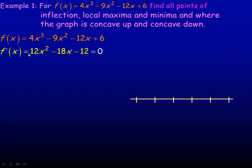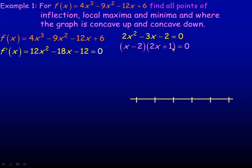We set that equal to zero. Notice we can divide a 6 out of all terms: 6 goes into 12x squared giving 2x squared, and 6 divided into negative 18x gives negative 3x, and 6 divided into negative 12 gives negative 2. To solve this quadratic equation, we can factor it into x minus 2 times 2x plus 1. Setting each factor to zero: x minus 2 equals zero gives x equals 2, and 2x plus 1 equals zero gives x equals negative one half. Those are the two places where the first derivative equals zero, where there might be local minimums or maximum points.